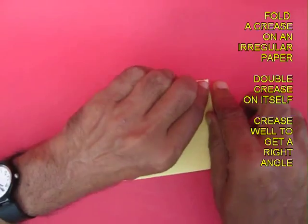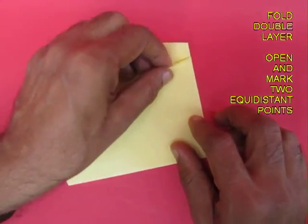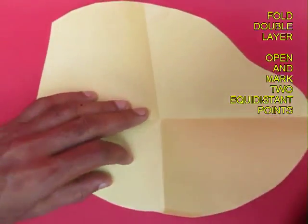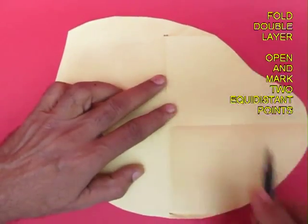Now this is a double paper and fold all the layers. On opening it you will find two equidistant points from the center and you mark them with a pen.